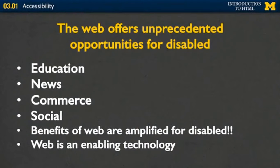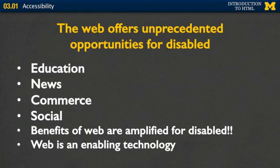So the web offers unprecedented opportunities for the disabled. We're all right now taking a class online, so education has the benefit of teachers reaching as many people as they can, and students have access to resources they never had before. Many people get their news from online resources, so we want to make it available to everybody. Commerce is particularly interesting because many places have online presences — but are they realizing they are alienating such a large customer base? And of course, the social benefits of the web are easy to see. The benefits of the web are amplified for the disabled — people who before could not access education, news, commerce, or social interaction are now able to do so. The web is an enabling technology, and we want to make sure we continue to make it so.